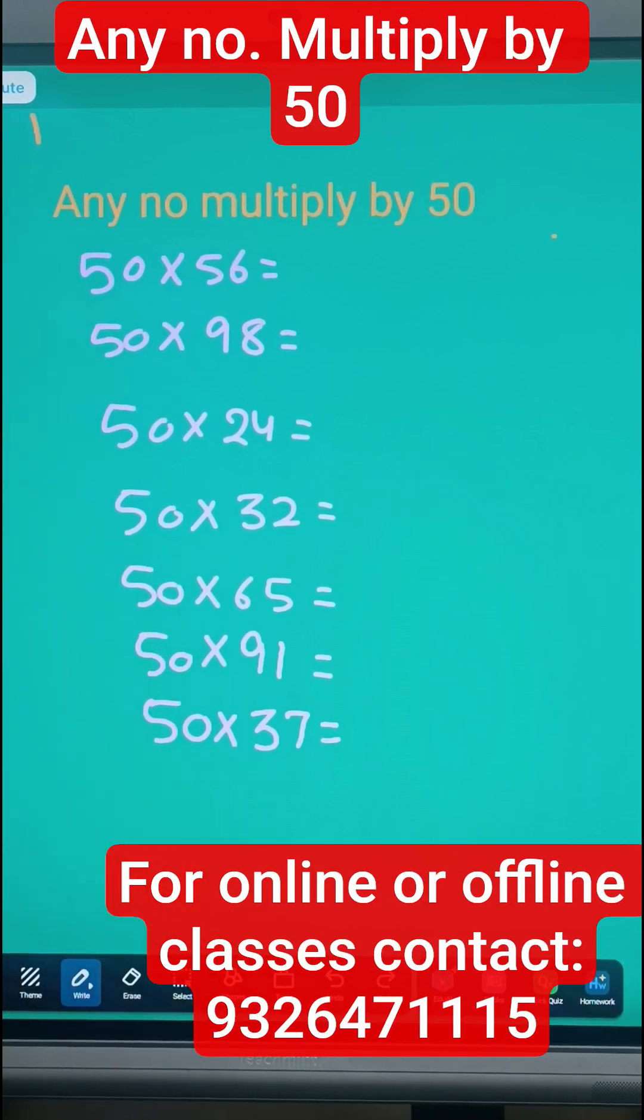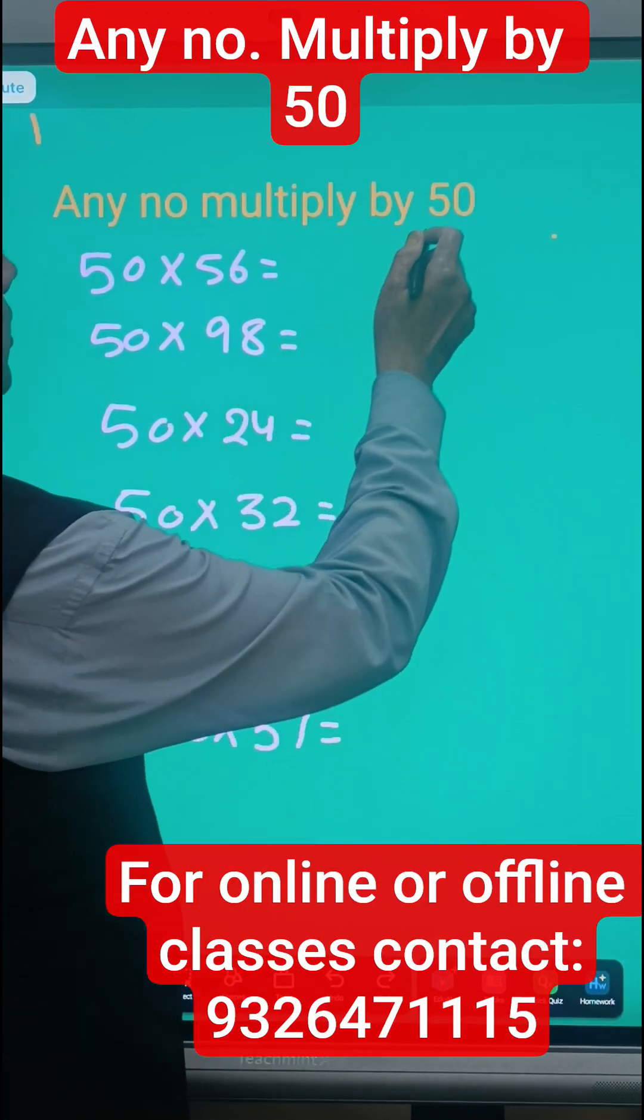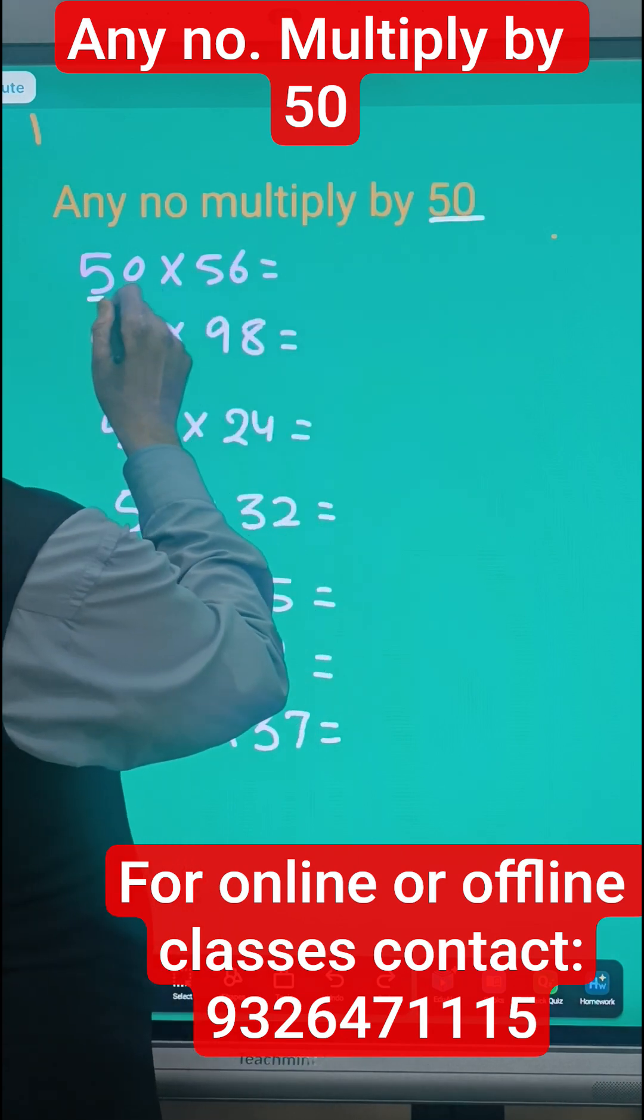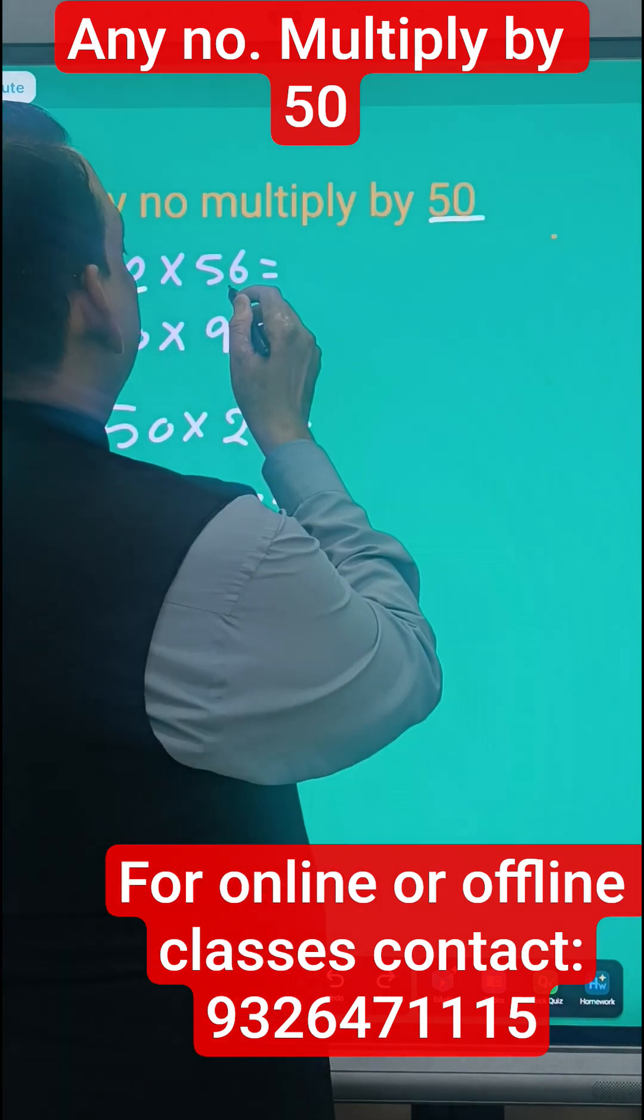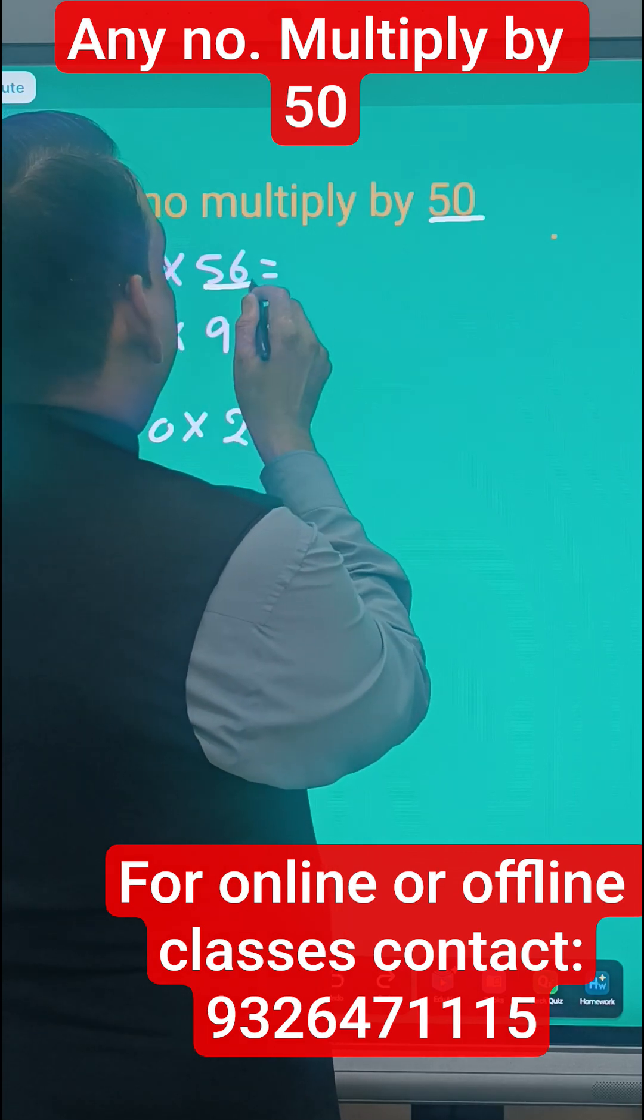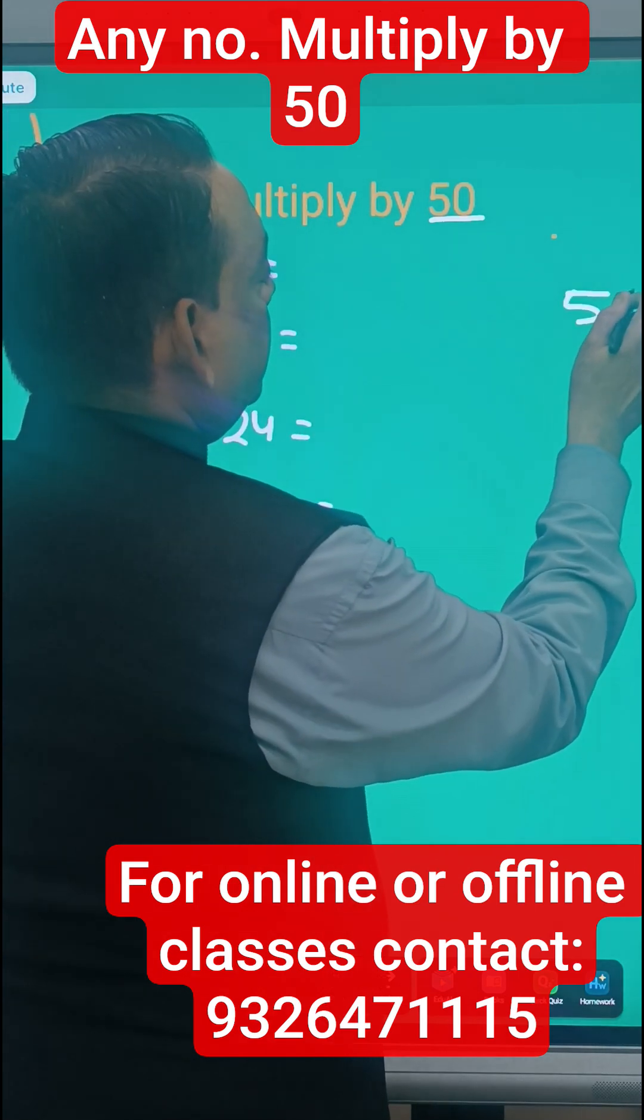Any number multiply by 50. The rule is: whenever one number is 50, multiply by any number, just take half of the number. Like 56 ka half is what? 28. Half meaning divide by 2, so 56 ka half is 28.